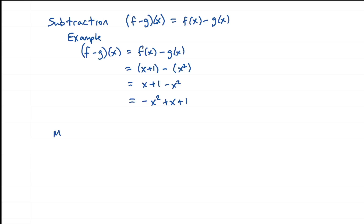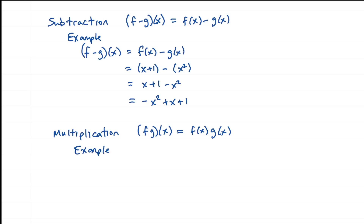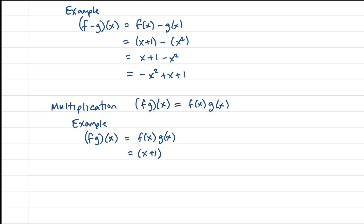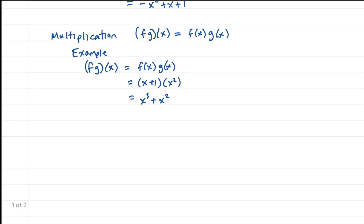Multiplication: here we have f times g of x, and this is going to be f of x times g of x. In our example, f times g of x equals f of x times g of x. Our f of x is x plus 1, times g of x which is x squared. Distributing through, x times x squared is x cubed, and 1 times x squared is x squared, giving us x cubed plus x squared.